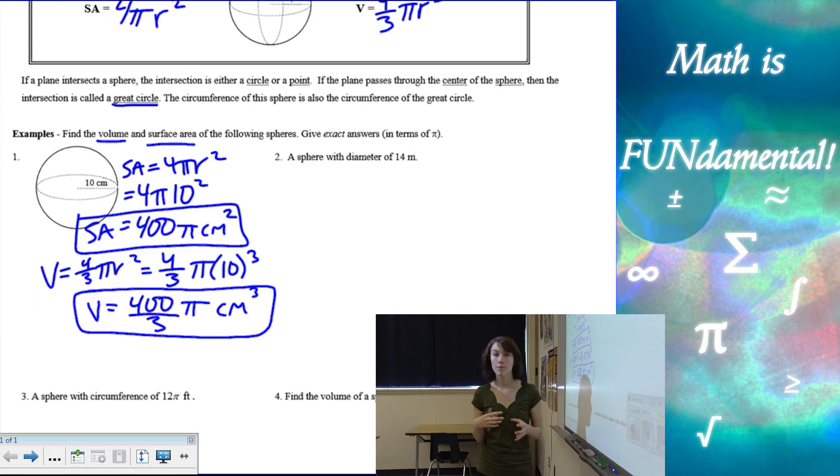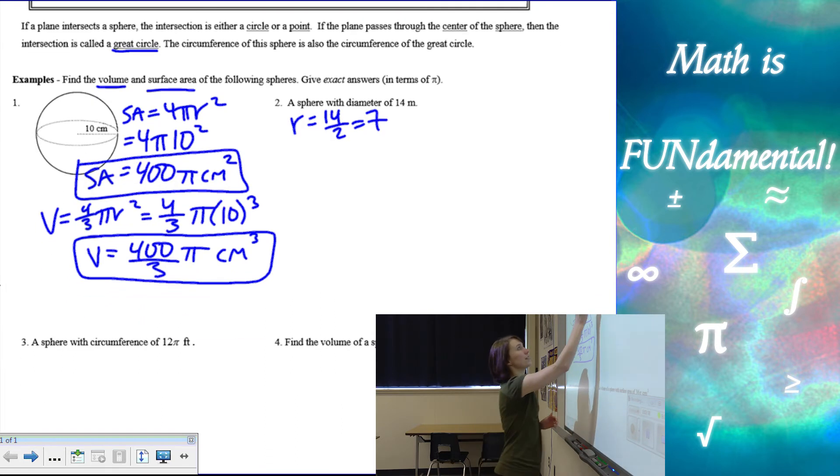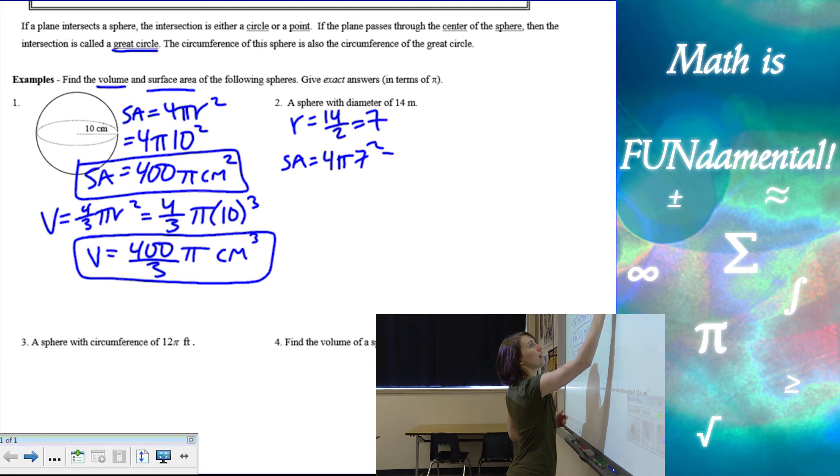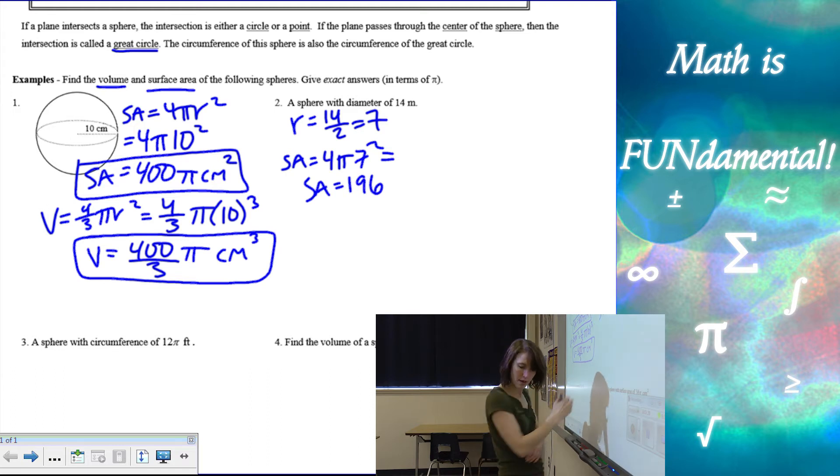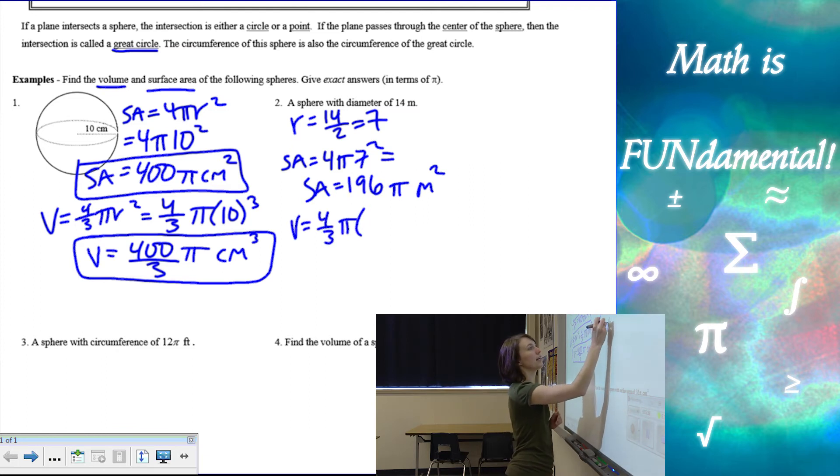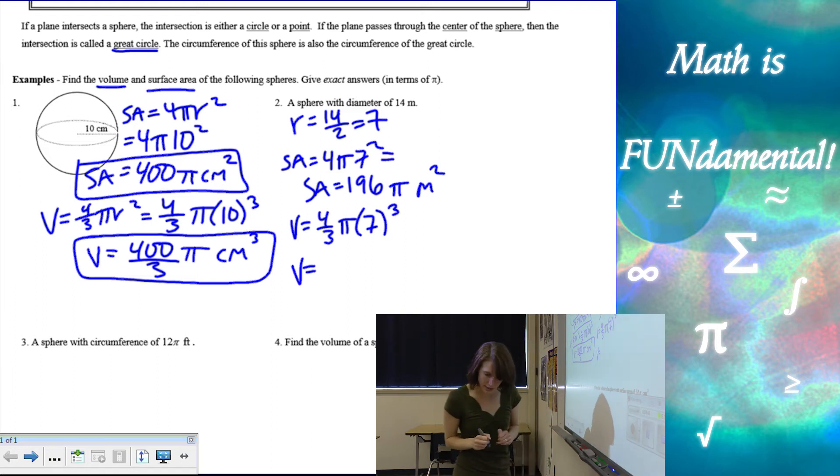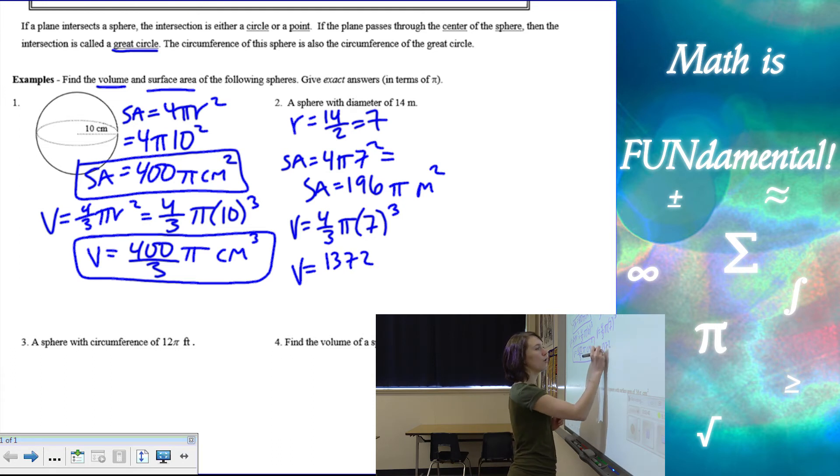Now, when we have problems where we're solving for more than one piece, make sure you label which one is surface area and which one is volume. Number 2 says a sphere with a diameter of 14 meters. So with a diameter of 14, all we need to do is take that diameter and find the radius, which just means dividing by 2. Then the rest of the problem is exactly the same. So surface area, we have 4 pi times 7 squared, or 49 times 4 is 196 pi meters squared. And my volume is 4 thirds pi times 7 cubed, which is going to give me 1372 over 3 pi meters cubed.